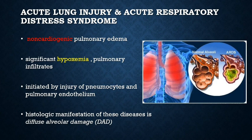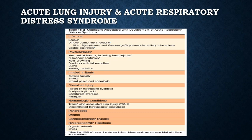Acute lung injury, also called non-cardiogenic pulmonary edema, is characterized by the abrupt onset of significant hypoxemia and bilateral pulmonary infiltrates in the absence of cardiac failure. Acute respiratory distress syndrome is a manifestation of severe acute lung injury. Both are associated with inflammation-associated increases in pulmonary vascular permeability, edema, and epithelial cell death. The histologic manifestation of these diseases is called diffuse alveolar damage. It can be due to infections, physical injury, chemical injury, or even systemic diseases.